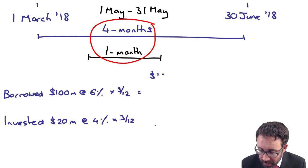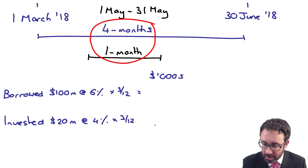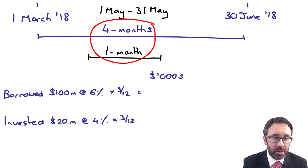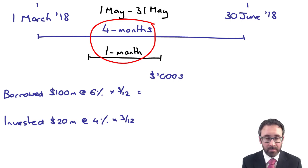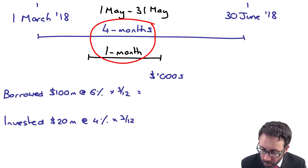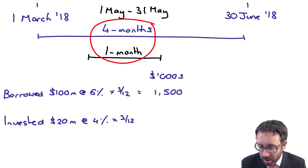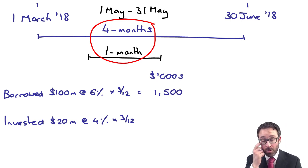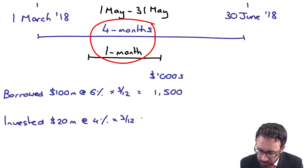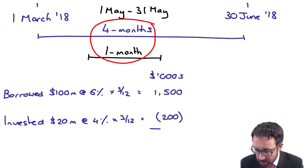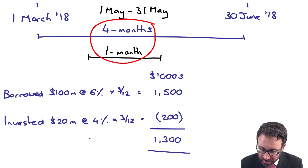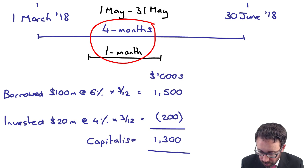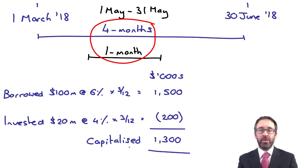Let's tap that into the calculator. Working in thousands, as you would in the exam: 100 million multiplied by six percent multiplied by three twelfths gives 1,500 thousand, that's 1.5 million. Then 20 million at four percent times three twelfths is 200 thousand. So the net amount that is capitalised is 1,300 thousand — that's 1.3 million dollars.